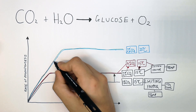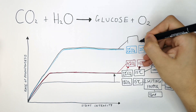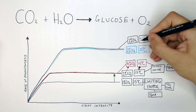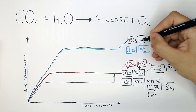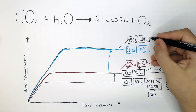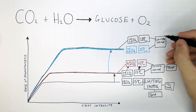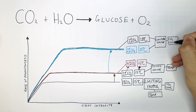Now we're growing the plant in 2% CO2 and 28 degrees Celsius. They are at the same rate of reaction for photosynthesis, so the limiting factor must be the concentration of CO2.